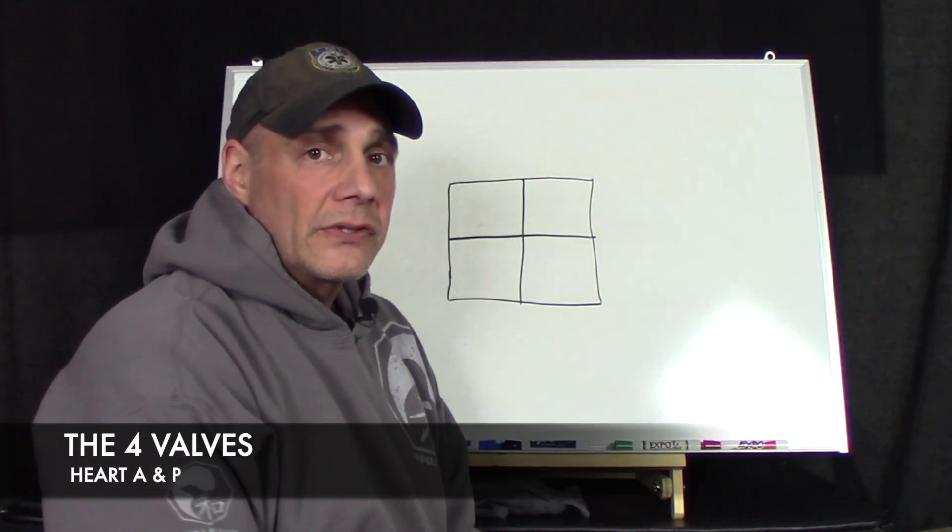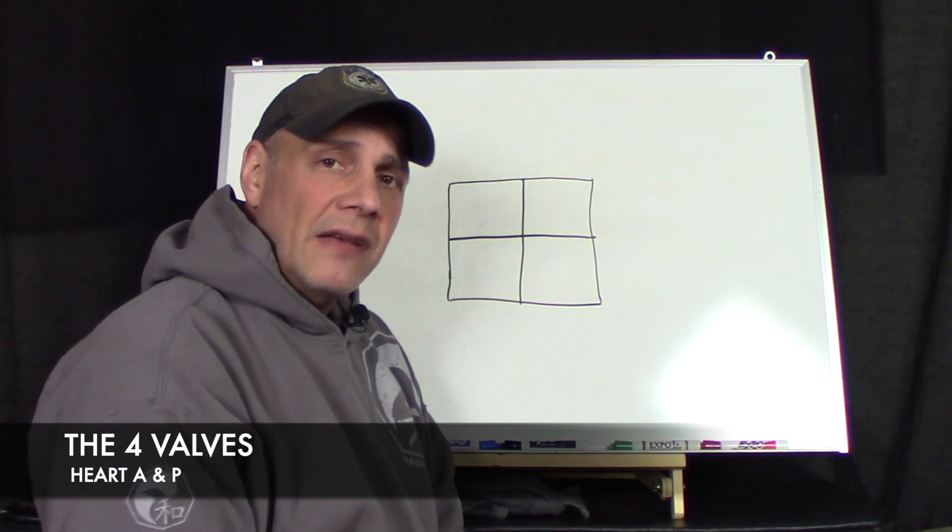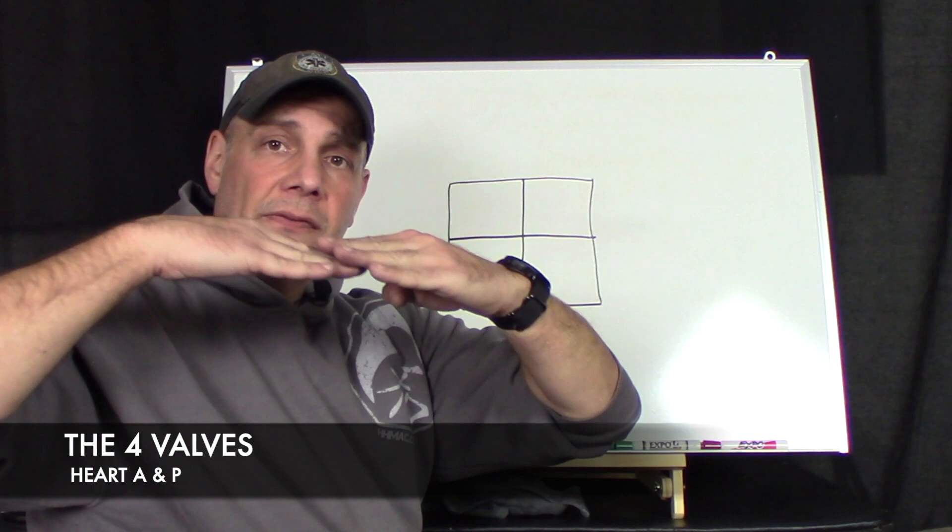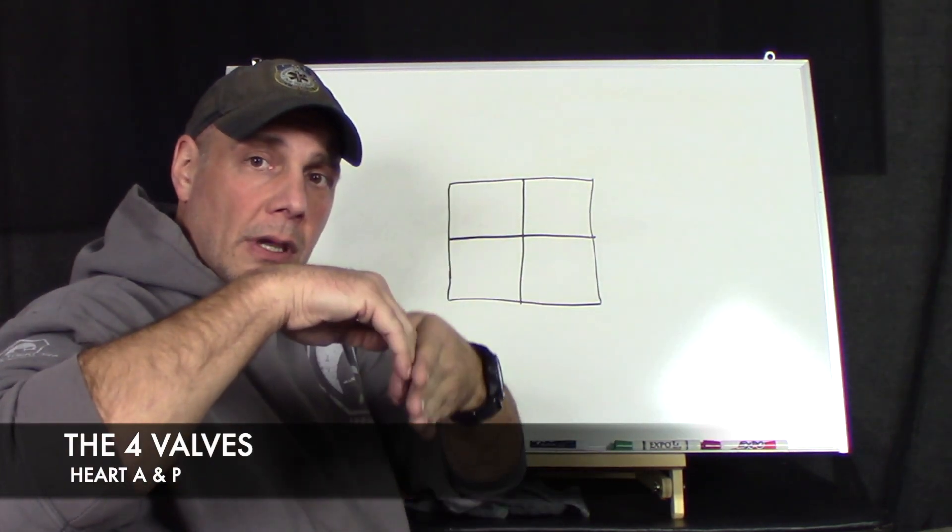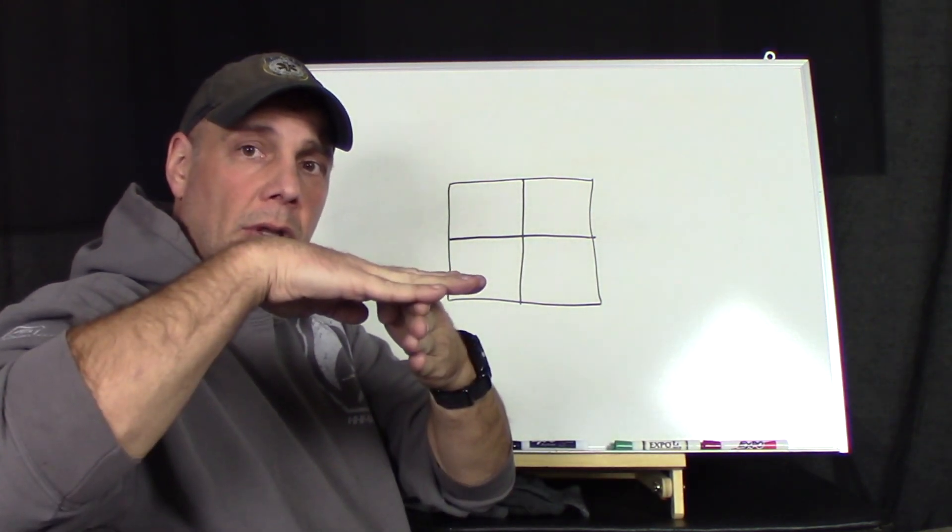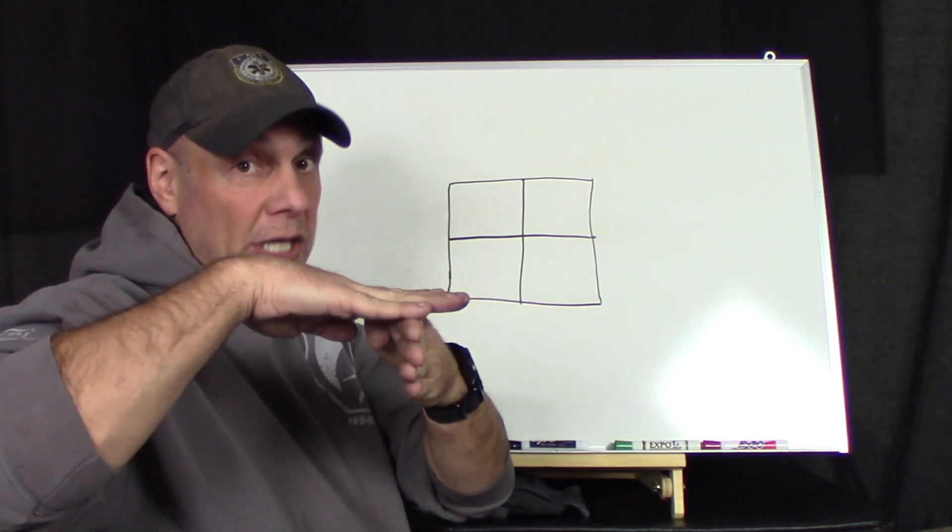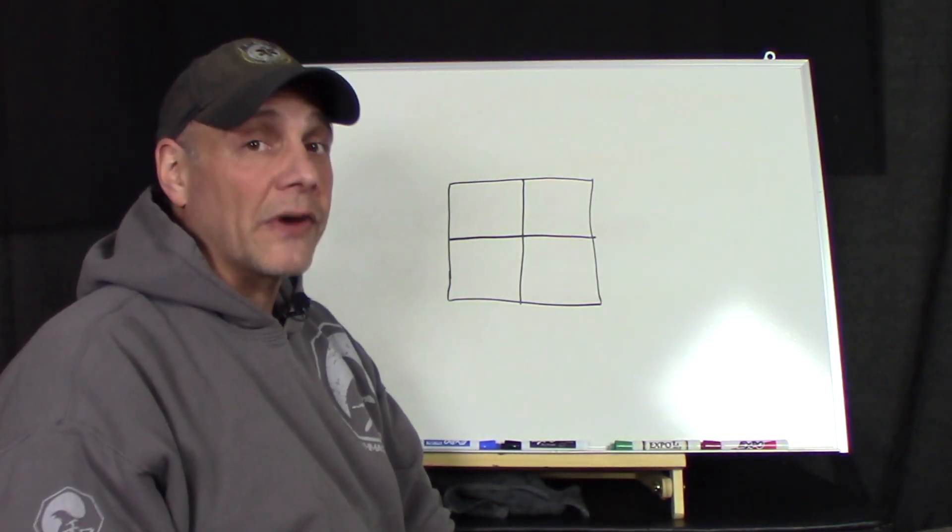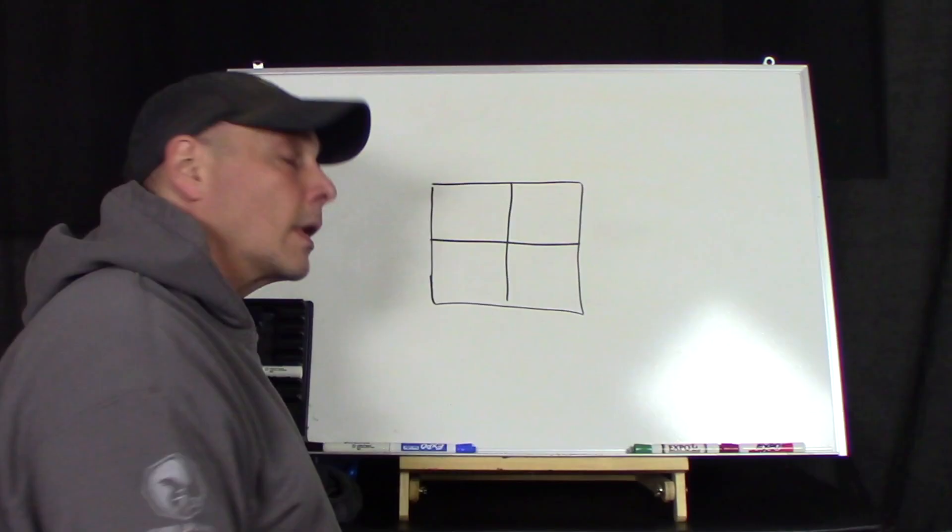So the next thing I want to go over are valves. We have four valves in our heart and they are very important. What the valves do is they prevent backflow of blood into the system. So if this was a valve it might have two or three flaps, right? The blood will flow. When the heart beats again, it creates pressure and will close, not allowing the blood to flow back. But because of the pressure, the blood's got to go somewhere. So it will go out the proper direction. Without valves, the blood would just go everywhere.